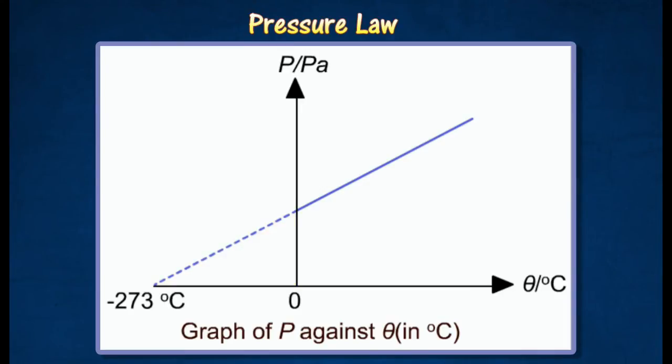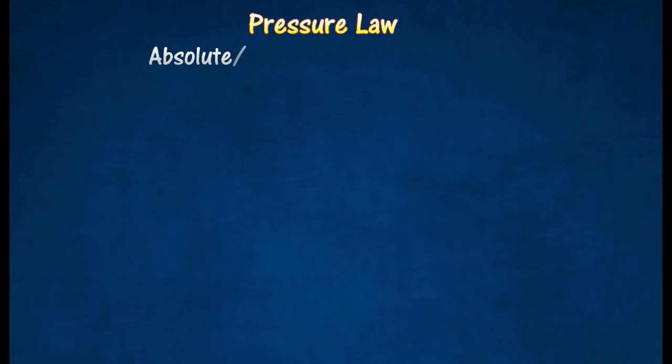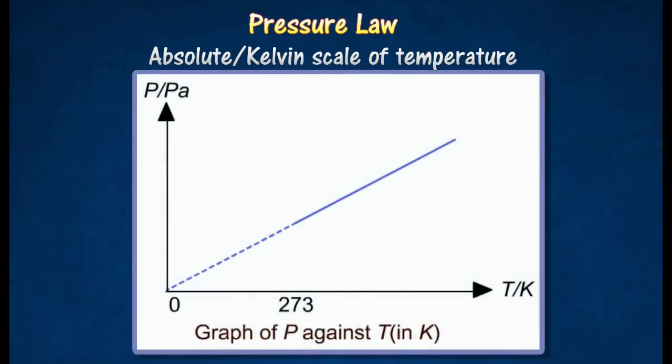By shifting the vertical axis 273 degrees Celsius to the left and renumbering the temperature scale, negative 273 degrees Celsius becomes zero on a new scale of temperature known as absolute or Kelvin scale of temperature.